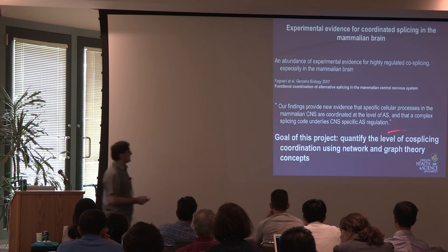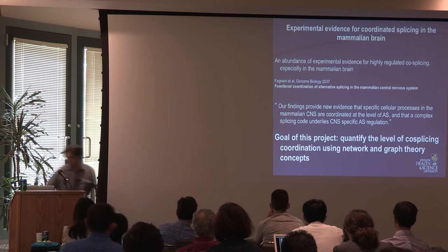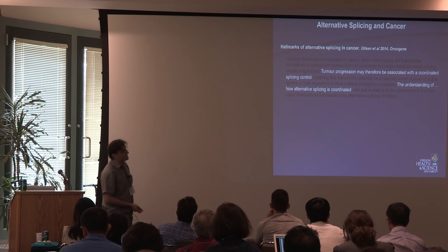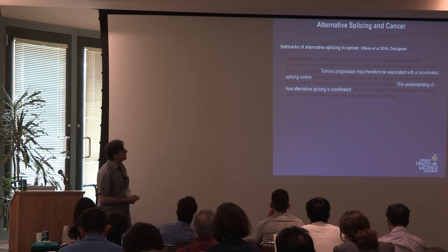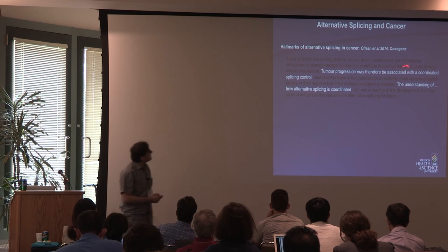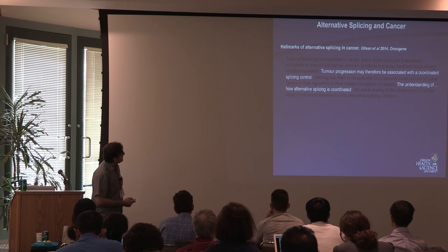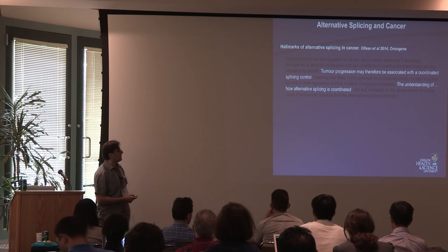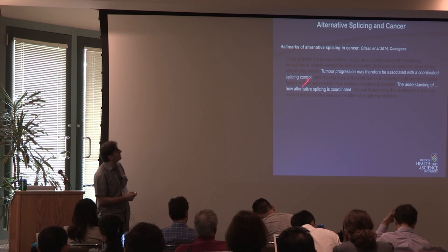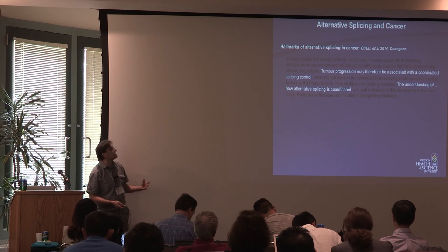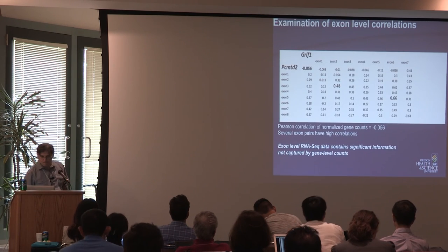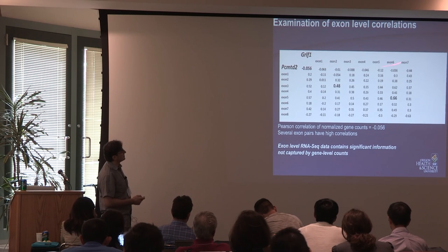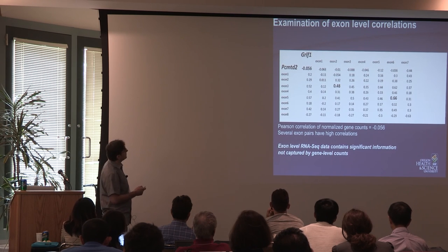The goal of the project is to quantify the level of co-splicing using network and graph theory concepts. In cancer, many changes occur in a cancerous cell, and one of the most striking examples is that tumor progression is associated with a coordinated splicing control. Many people are interested in how alternative splicing is coordinated or misregulated, so you have to compare healthy and disease tissues to see if there are changes.